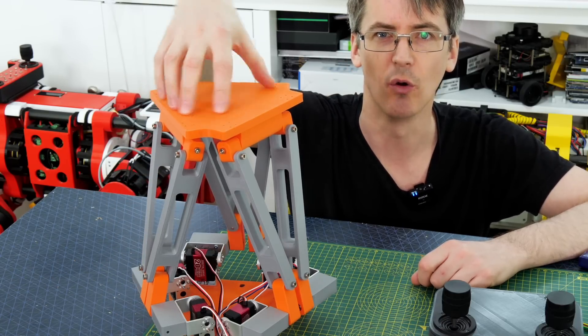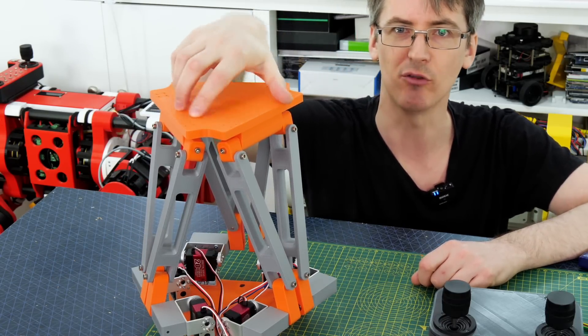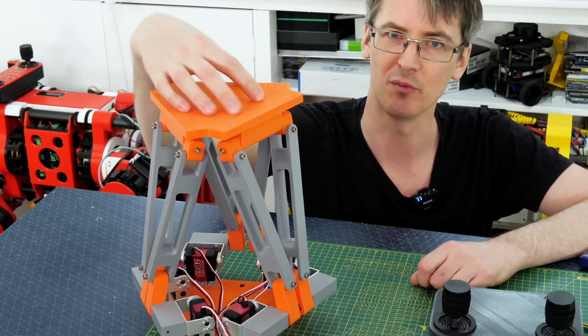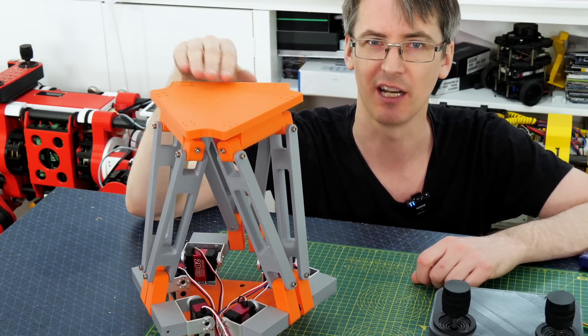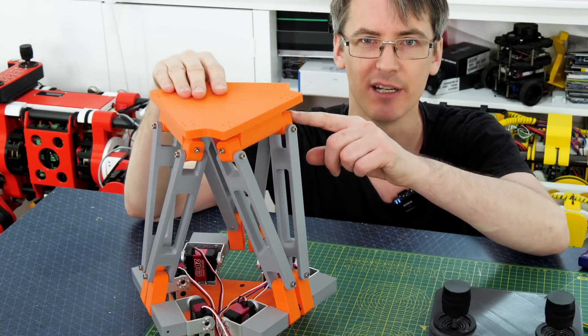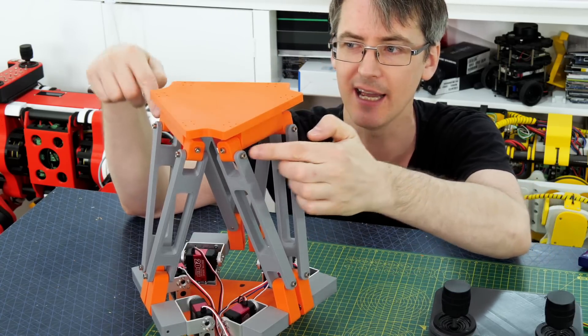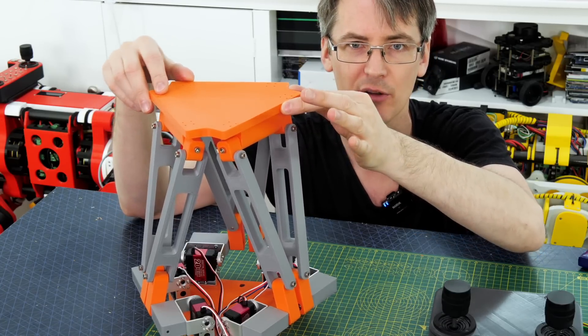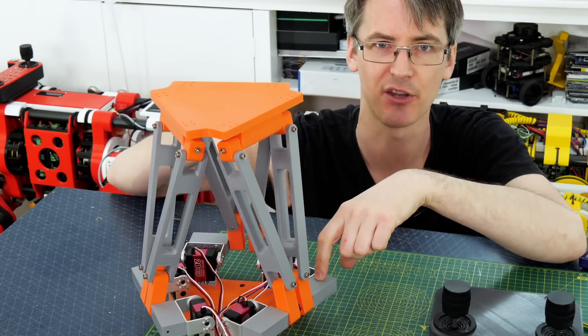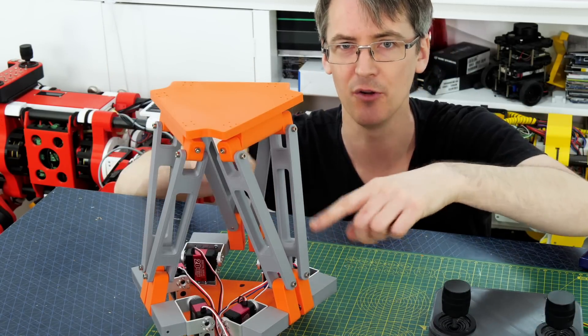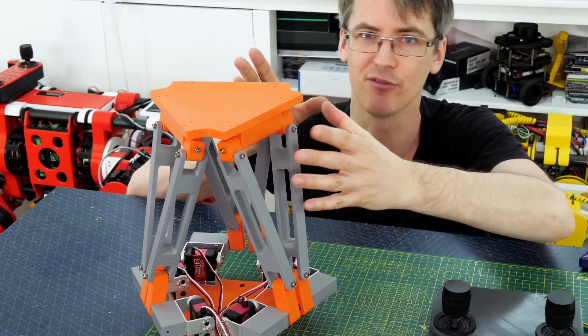The other thing I can't do with this one is yaw, which is rotating the whole table round, which you can in other Stewart platforms. And the reason for that is that it doesn't physically move like that. To do that I would need to have an actual vertical rotation axis on each of these joints here, so basically another linkage that would actually allow that rotation. Then all we need to do is make every other servo high and every other one low and that should push it round in each direction.